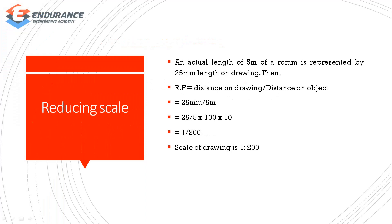The next one is reducing scale. For example, we have a 5mm rod with a length of 25mm. The distance is 25mm divided by 5m length. Converting: 15 by 5 into 100 into 10 gives 1 by 200. So the drawing scale is 1 is to 200.